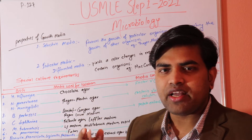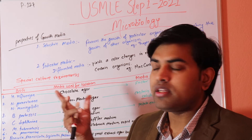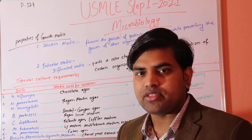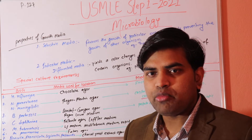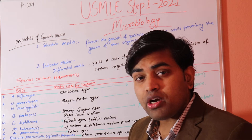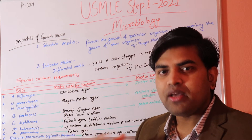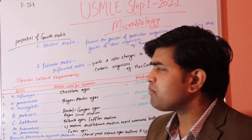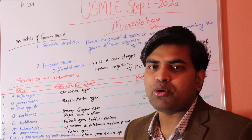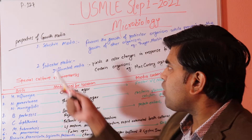Growth media is simply the environment and food for bacteria to grow in the lab. Extracellular organisms can grow in this type of media, but intracellular organisms like Rickettsia, Chlamydia, or viruses cannot — they require cell culture. For bacteria, they can easily grow in the artificial medium with optimum pH and temperature.